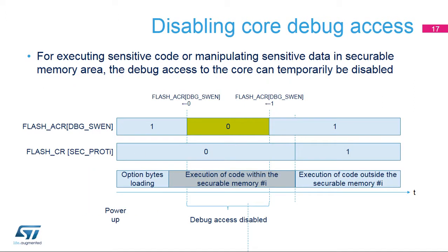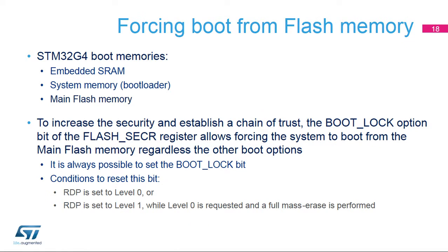Taking control of the Cortex-M4 by using invasive debug can be temporarily disabled by programming the DBGSWEN control bit appropriately. For instance, the secure boot can clear this bit before performing authentication and decryption, then set it to 1 to re-enable invasive debug once authentication is successful. In the STM32G4, three different boot modes can be selected: boot from embedded SRAM, boot from system memory, and boot from main flash memory. Executing a secure boot from securable memory implies that the boot area is the flash memory. To disable the other boot areas, the boot lock option bit has to be set in the Flash Sec-R register. This option bit can be set unconditionally; however, resetting it is only possible when RDP level is 0, or when RDP is changed from level 1 to level 0, which causes a full mass erase.